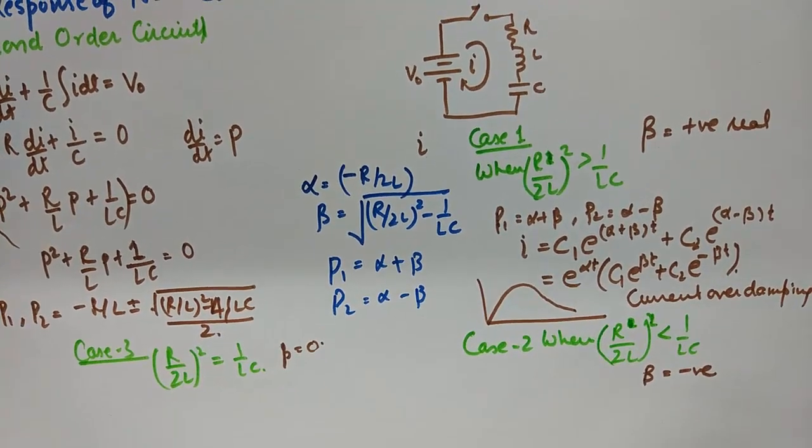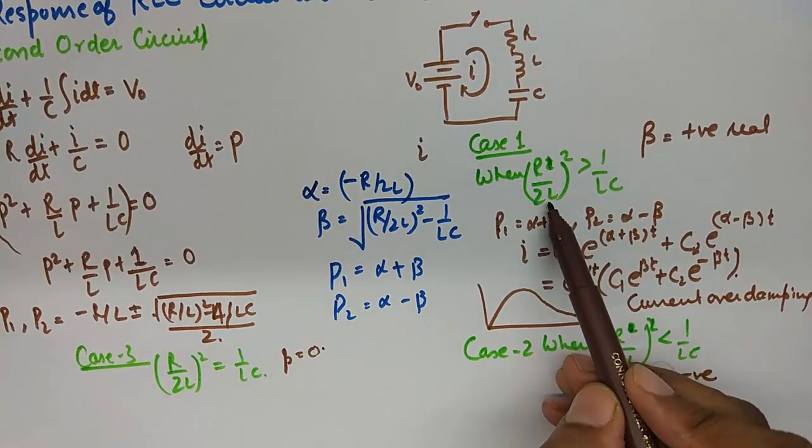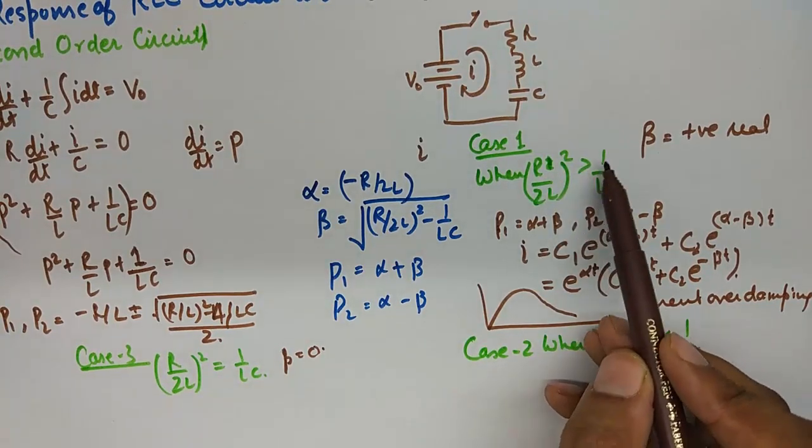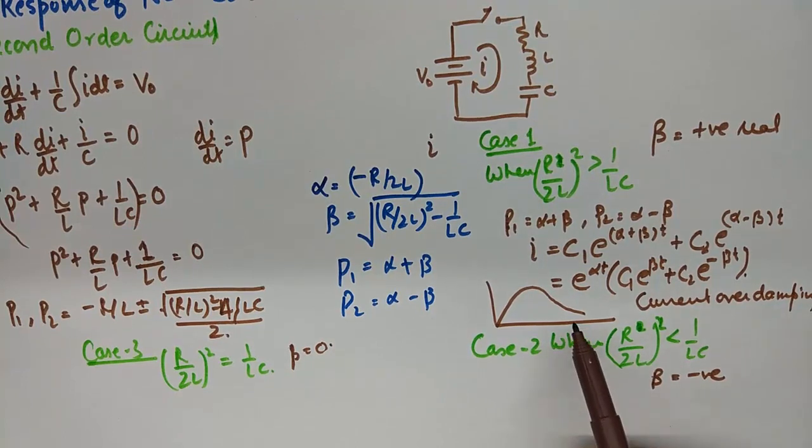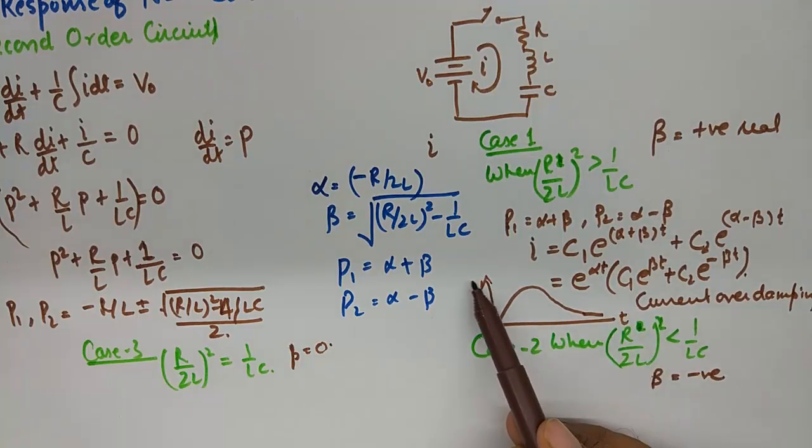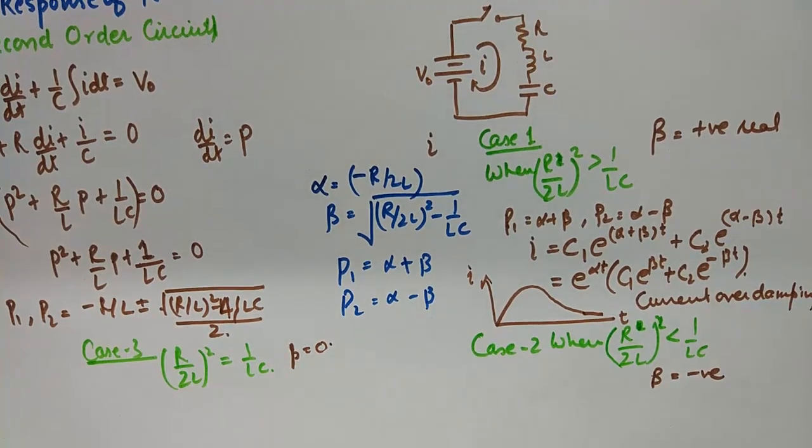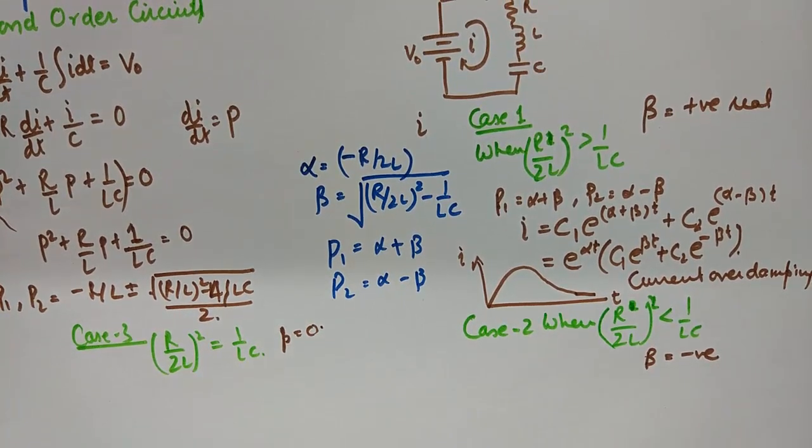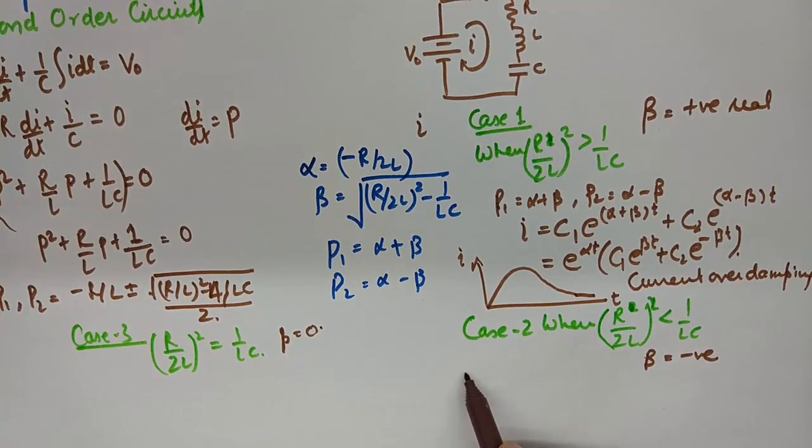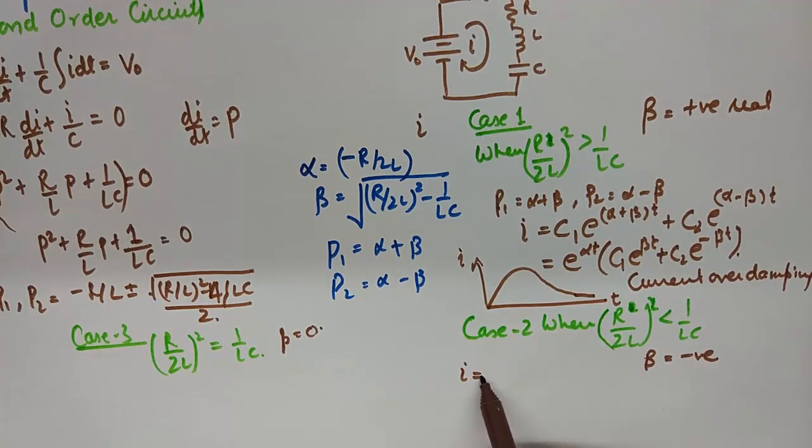So whenever you find a case where the combination of R upon 2L square is greater than 1 upon LC in a circuit, you can expect your current to behave like this with respect to the time in the circuit.